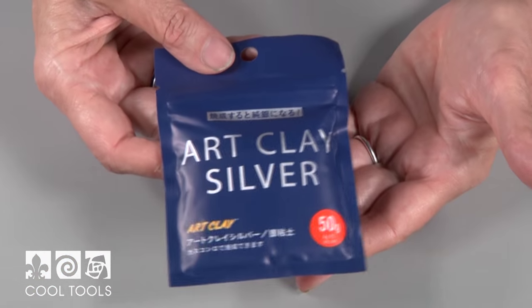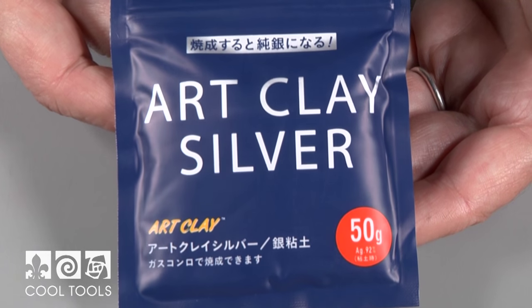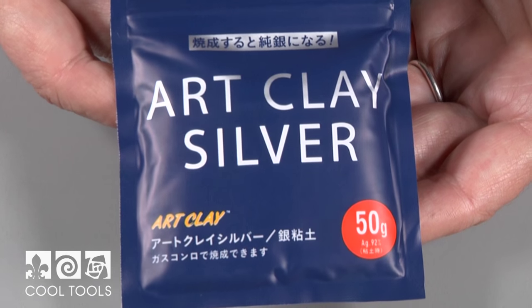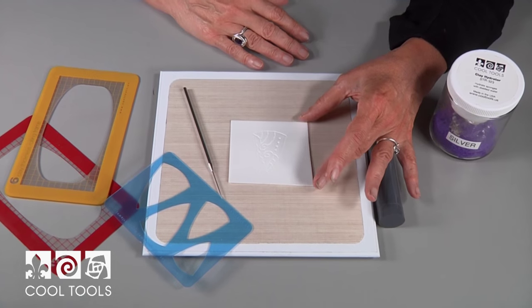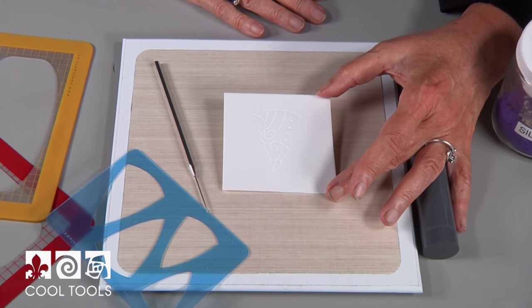You can use any metal clay with scratch foam, but today I'm going to use Art Clay Silver, which is one of my favorite clays to work with. It's wonderful, it's flexible, and it takes the texture beautifully. Now I'm going to show you how to use the scratch foam plate that you've created to roll into your metal clay.